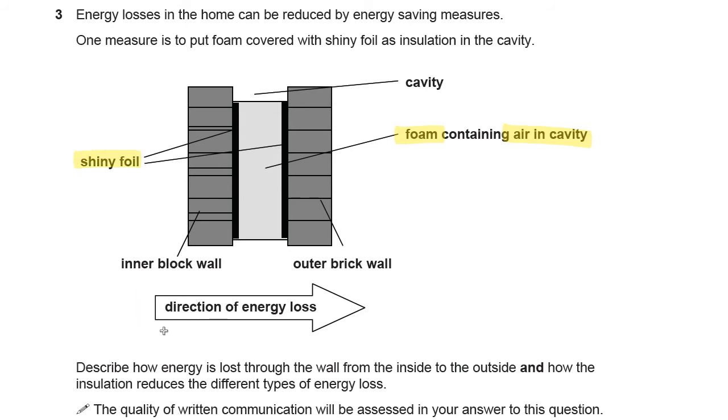Now it shows you the direction of the heat loss which normally is going to be from a warm inside to a cold outside. But sometimes actually insulation happens in the other direction to keep the house cool. But that's not too important for this question really. What are we asked to do? Describe how energy is lost through the wall from the inside to the outside and how the insulation reduces different types of energy loss.